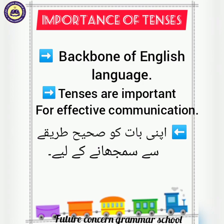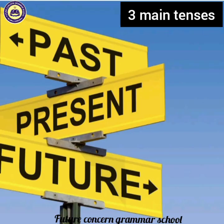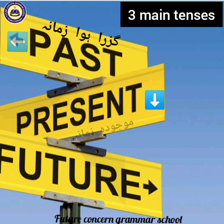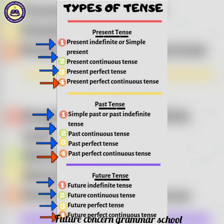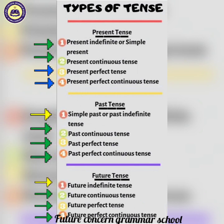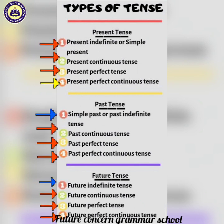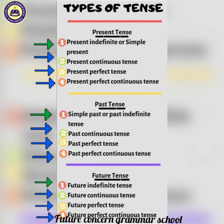There are three main tenses: past, which refers to time gone by; present, which refers to the current time; and future, which refers to the time yet to come. Each of these tenses has four further types: indefinite tense, continuous tense, perfect tense, and perfect continuous tense.